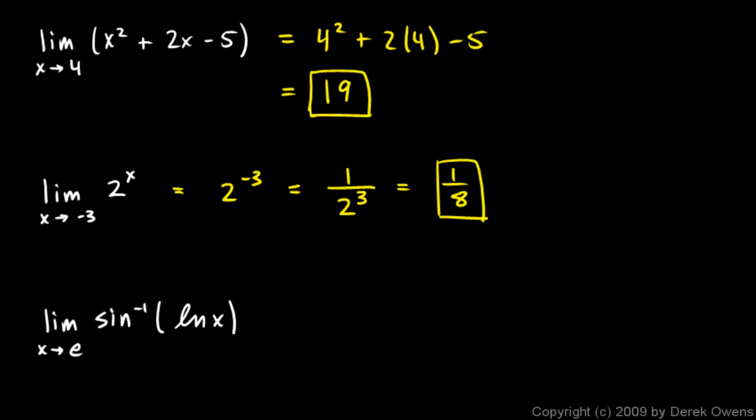And this next one looks tricky, but it's not. The limit as x approaches e of the inverse sine of the natural log of x. And that sounds hard until you realize that we're just putting in a value of e for the variable. So this gives us the natural log of e, which is 1. So the problem becomes the inverse sine of 1.